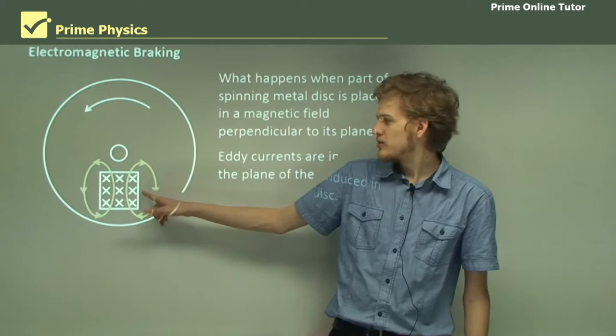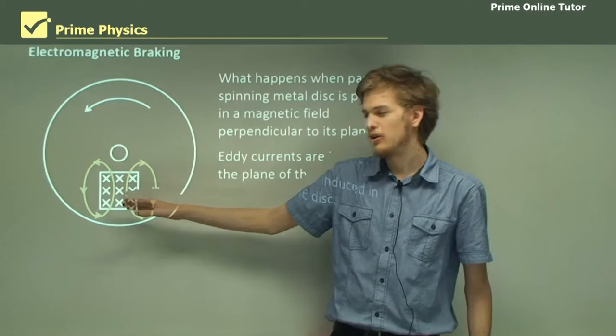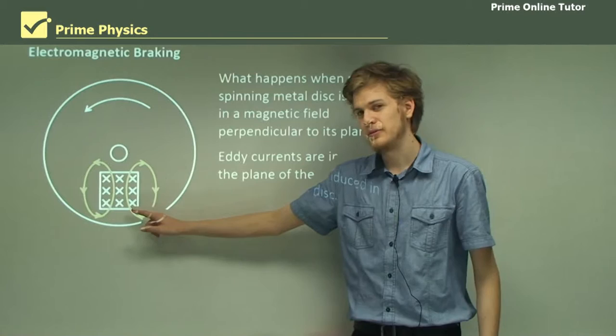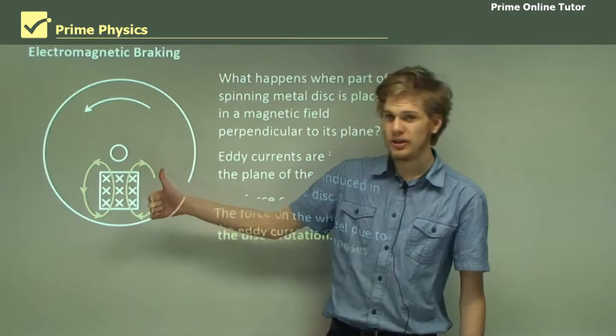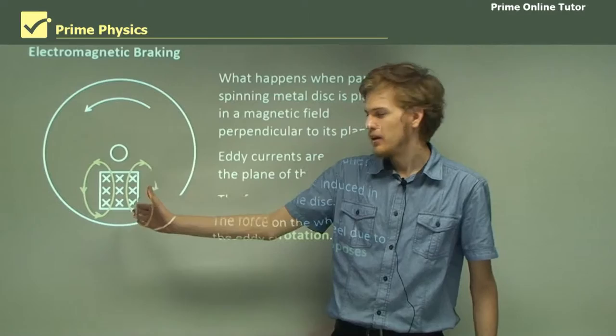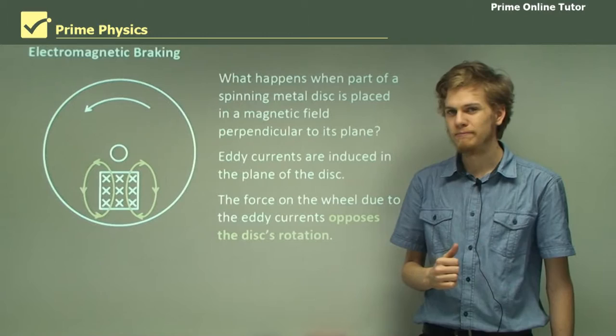This means that on one side of the disk, current will flow in one direction to create flux, whereas on the other side of the disk, current will flow in the other direction to try and produce flux opposing the magnetic field. The force on the wheel due to the eddy currents will oppose the wheel's rotation. We can see that if there's a current going through here and a magnetic field in that direction, then the force will be backwards. So all the current flowing through the magnetic field will oppose the direction of the wheel.